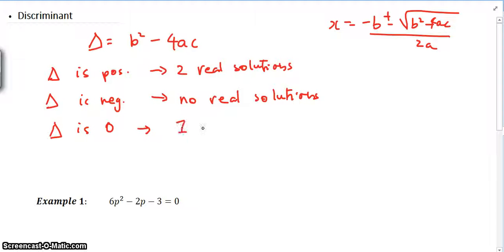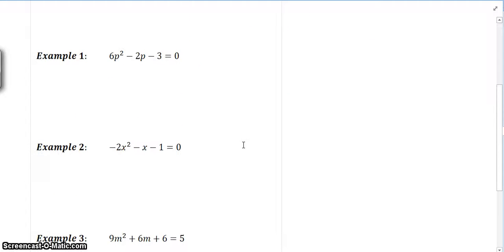what we have is one real solution. So those are the three conditions that we have that we are going to investigate just now. So let's have a look at the first case here. Remember what the formula for discriminant is. Delta equals b squared minus 4ac.